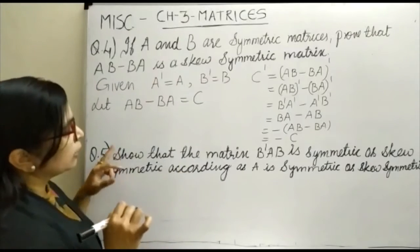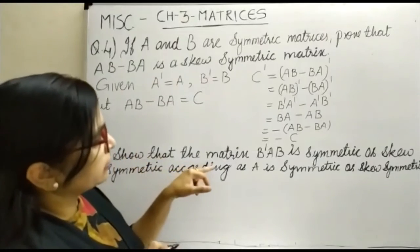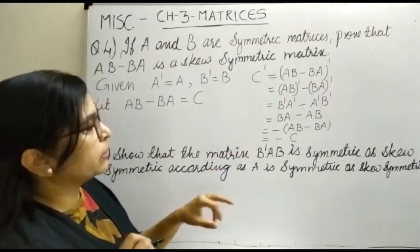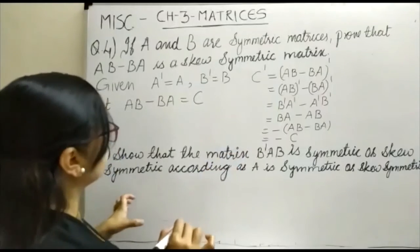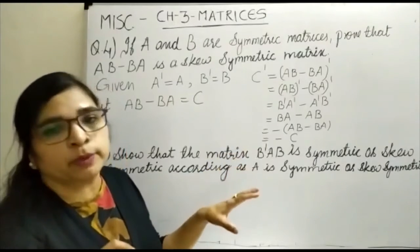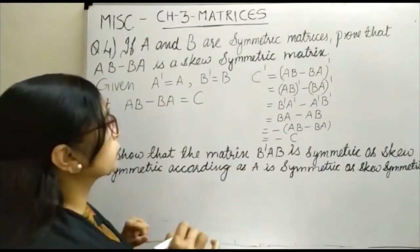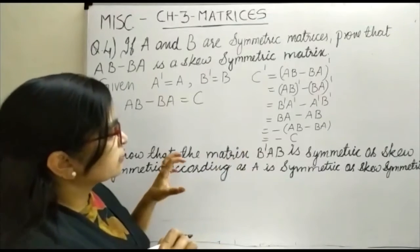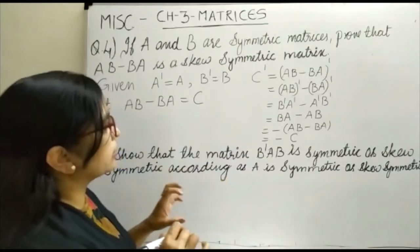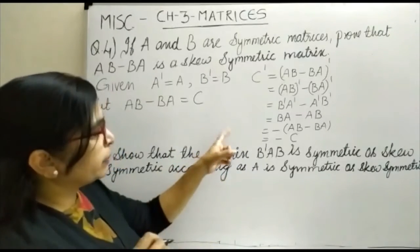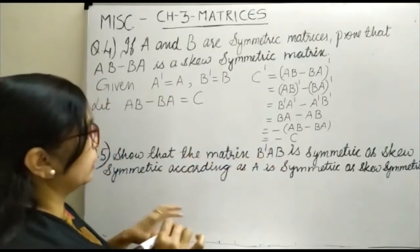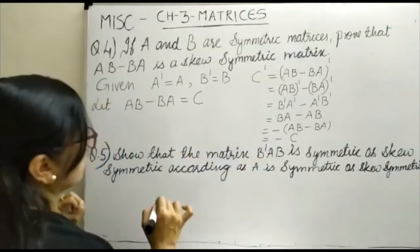Question number 5 says: show that the matrix B transpose A B is symmetric or skew symmetric according as A is symmetric or skew symmetric. So the symmetric and skew symmetric condition of B transpose A B depends upon A.